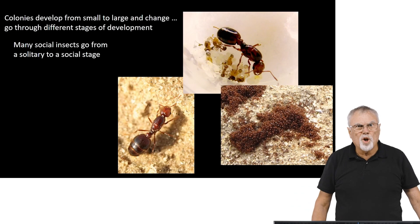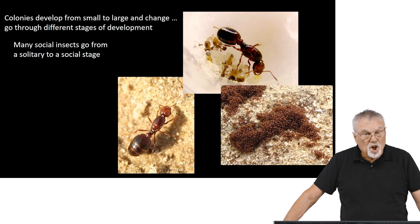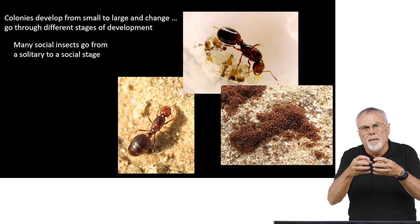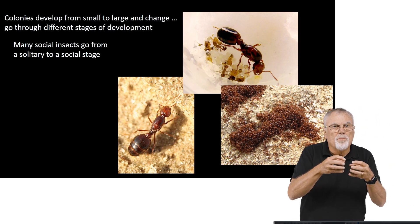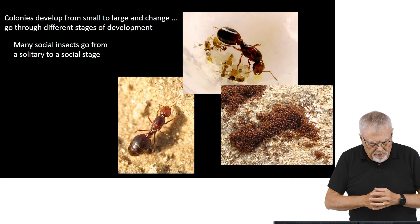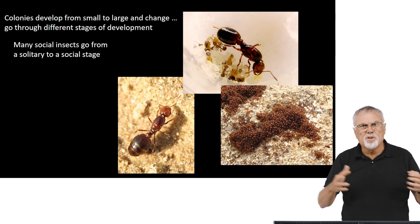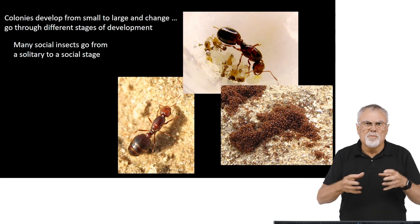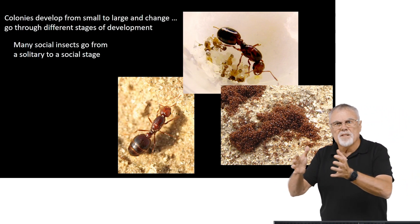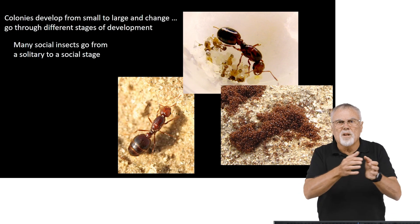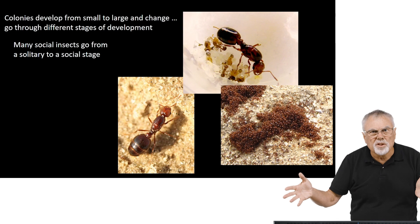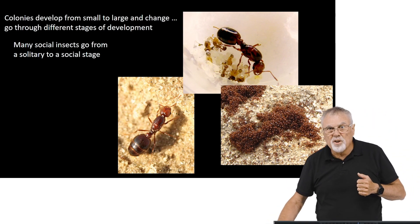Colonies develop from small to large and change — they go through different stages of development. This was something that William Morton Wheeler looked at: many social insects go from a solitary to a social state, developing from something more primitive into something more social, walking through stages of phylogenetic evolution.